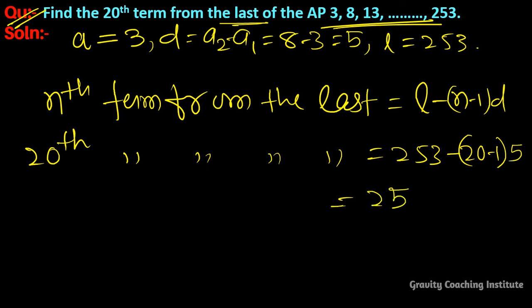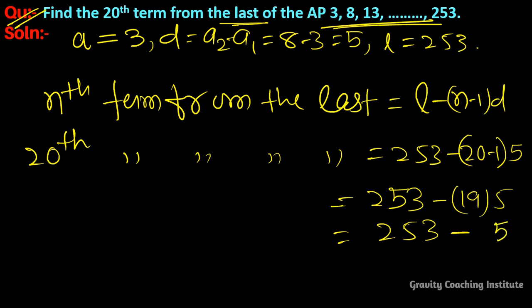So this is equal to 253 minus 19 into 5, which is 253 minus 95, equal to 158. So the answer is 158.